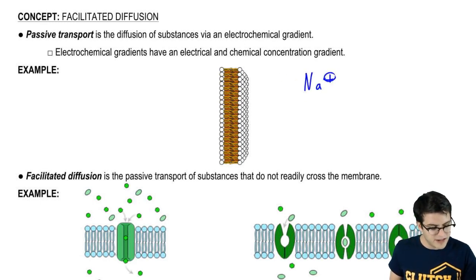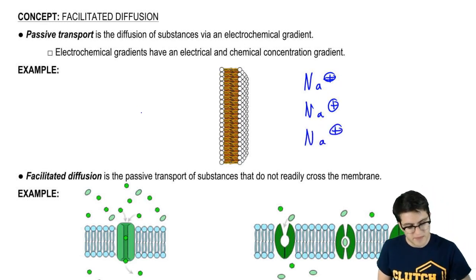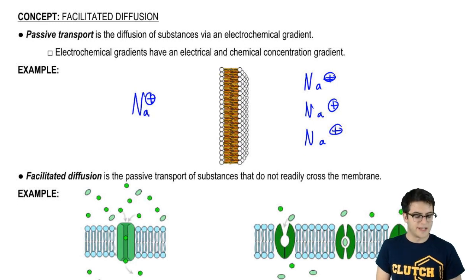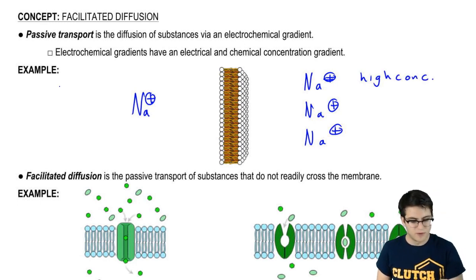I'm going to use sodium, it's like my favorite ion example. If I have three sodium ions over here and one sodium ion over here, there is a concentration gradient. So over here we have high concentration, and over here we have low concentration.